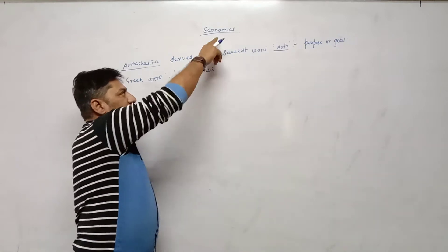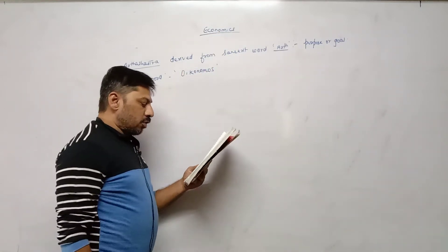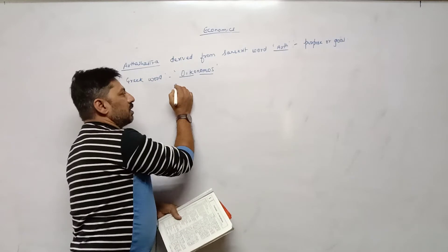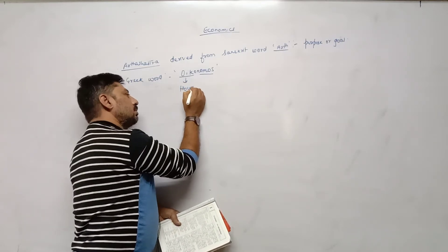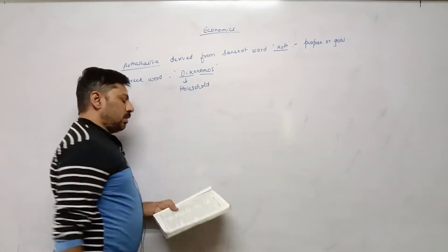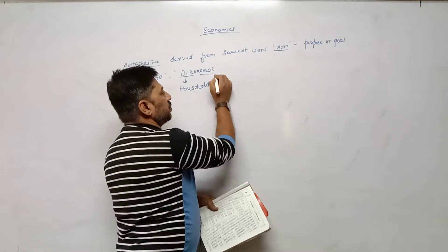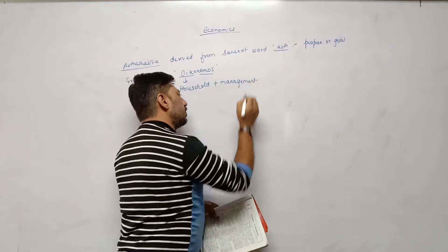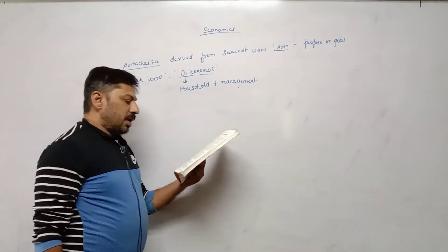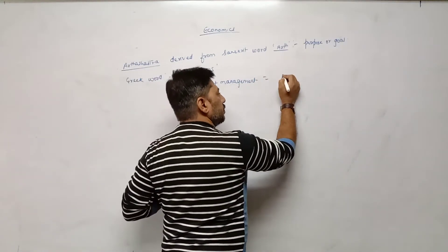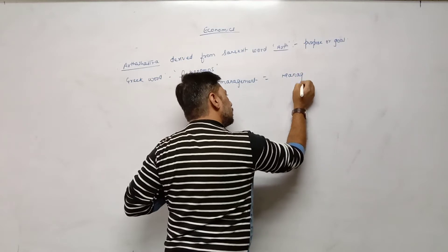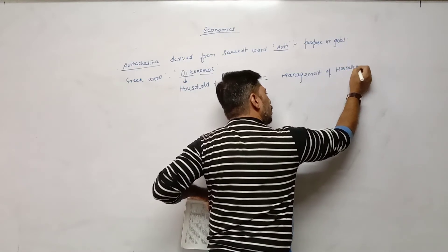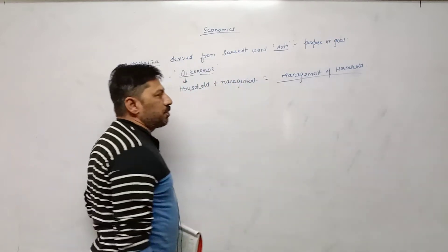The Greek word Oikonomos has two parts: Oiko and Nomos. Oiko means household, and Nomos means management. So economics means management of household.